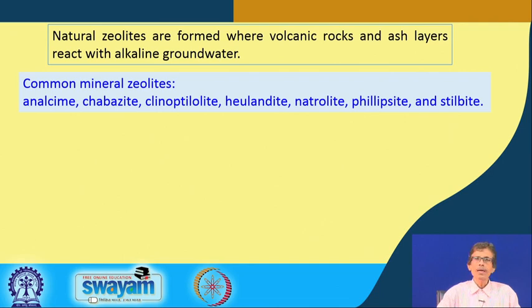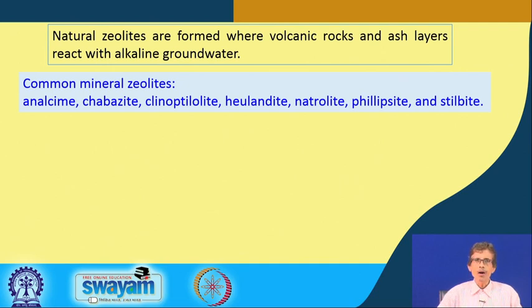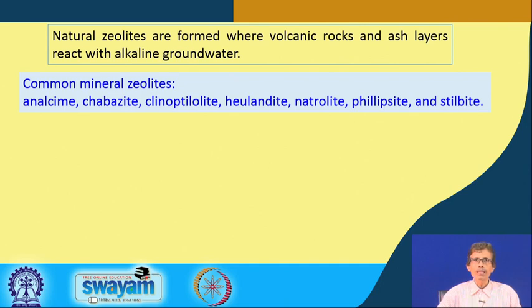This mineral type zeolites are of different kinds: one is analcime, then chabazite, then clinoptilolite, then heulandite and natrolite and phillipsite and stilbite. These are typically of geological origin and these geological names can be a little difficult, but inorganic chemists are always interested to know the basic chemical composition, since the formation of this natural zeolite is typically dependent on a chemical reaction in alkaline groundwater medium.